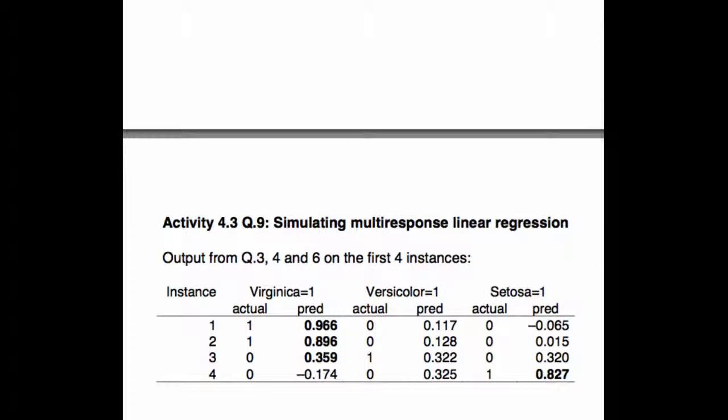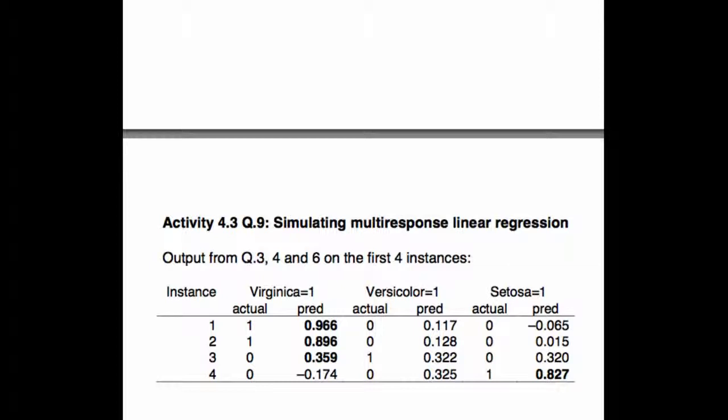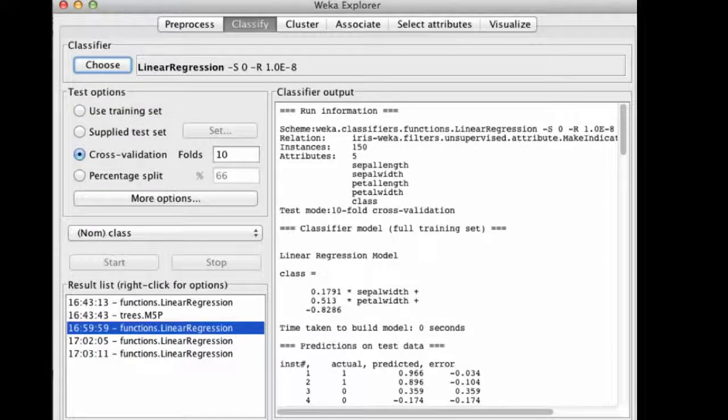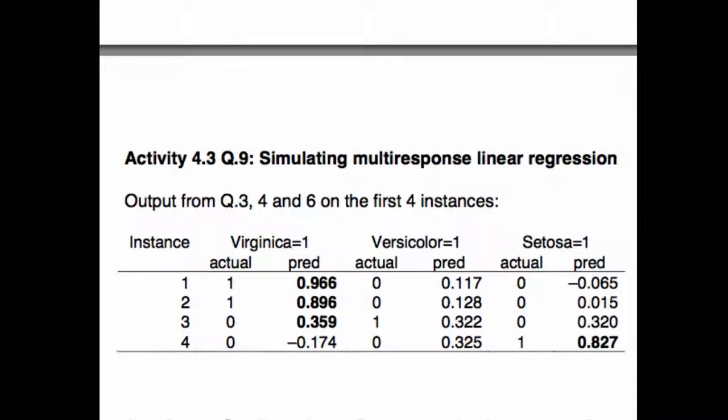When we do the corresponding mapping for Versicolor, we get this is the actual class. We just run Weka and look at what appears on the screen, and this is the predicted value. And we get these for Setosa. So you can see that the first instance is actually a Virginica, 1, 0, 0. And I've put in bold the largest of these three numbers. This is the largest point, .966. It's bigger than this and this.